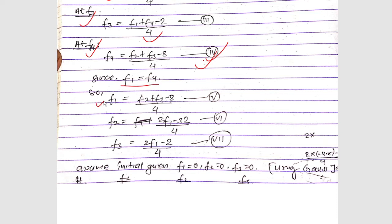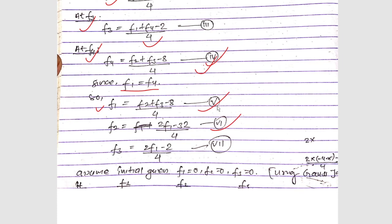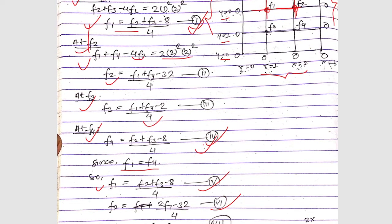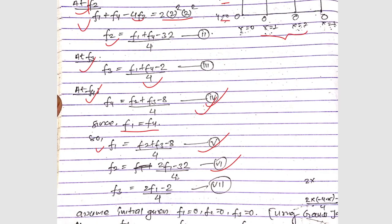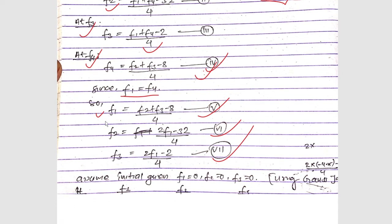Using f1 = f4, we simplify the equations. Equation 1 stays: f1 = (f2 + f3 − 8) / 4. For f2: f2 = (2f1 − 32) / 4. For f3: f3 = (2f1 − 2) / 4. We now have three equations to solve for f1, f2, and f3.